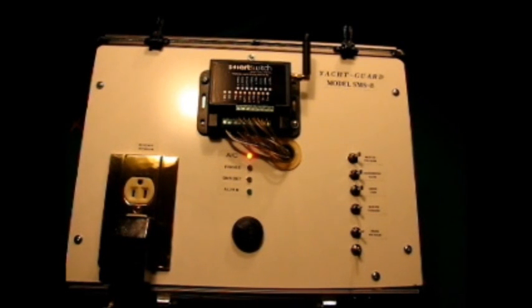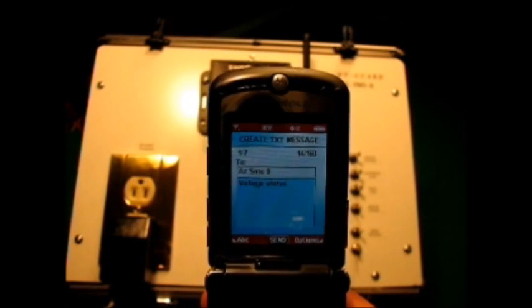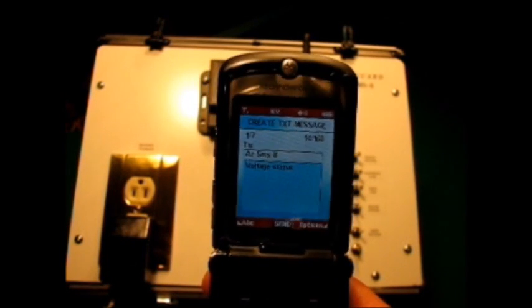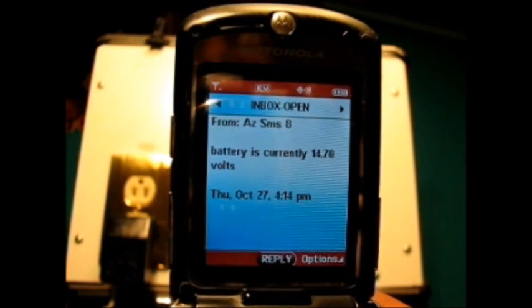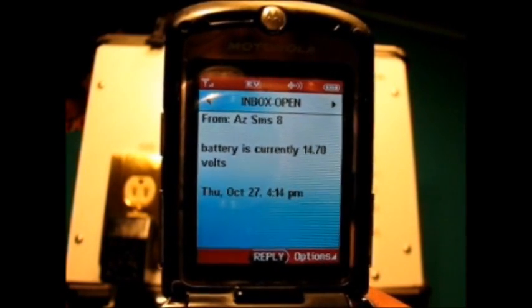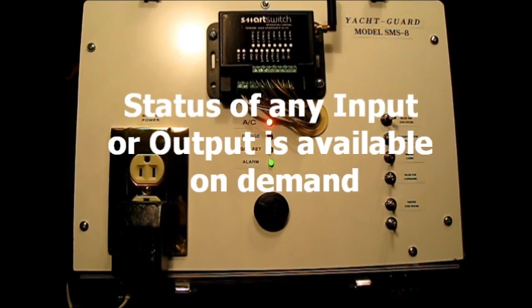Another feature of the yacht guard system is the ability to monitor battery condition. So in addition to monitoring shore power and its connection and disconnection from the vessel, the condition of your batteries can be monitored as well. This is done by interrogating the system via a text message. Here we send a message requesting voltage status. And the system will respond shortly. And here we see that the system responded with a message indicating that the battery is currently at 14.7 volts. Similarly, any input or output wired into the SMS-8 can be interrogated as to its status using text messages.